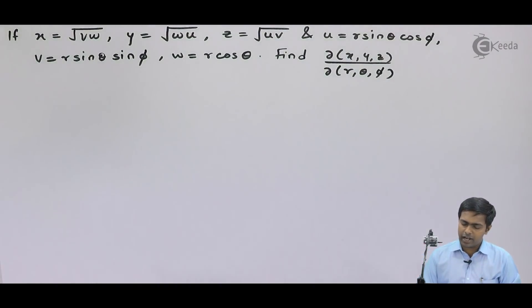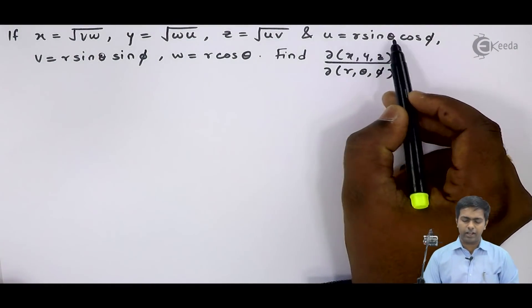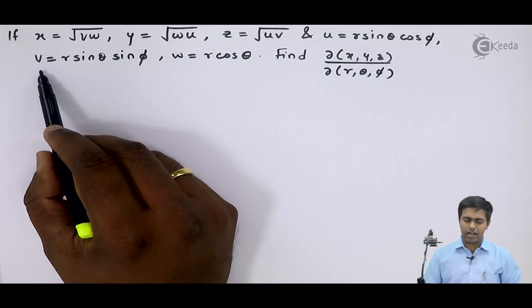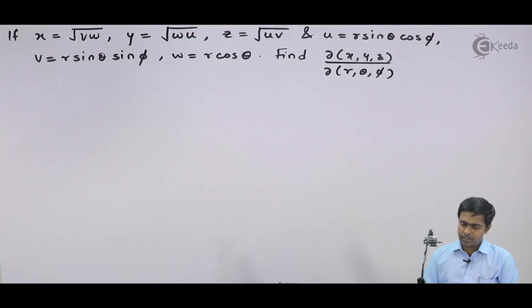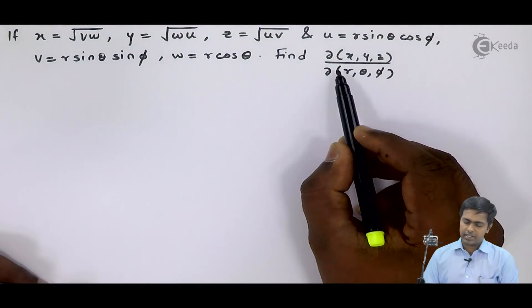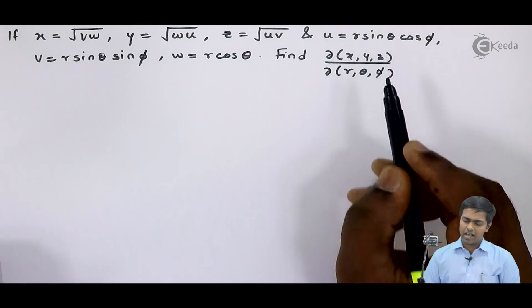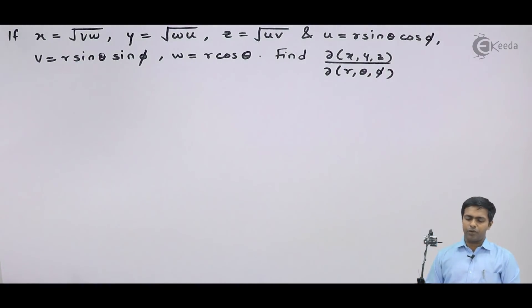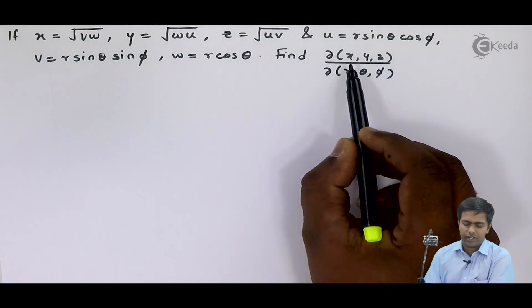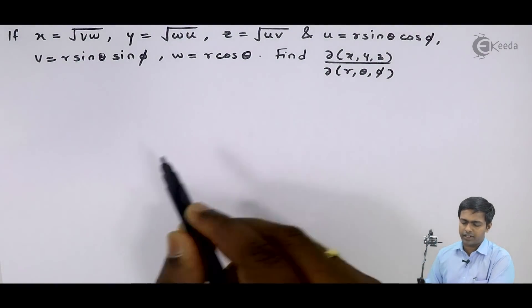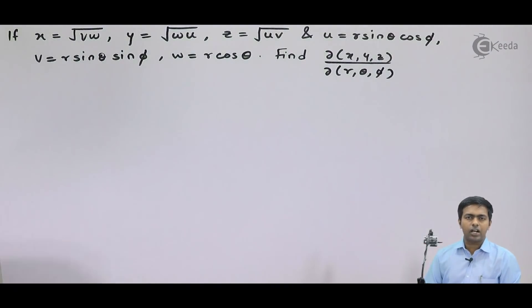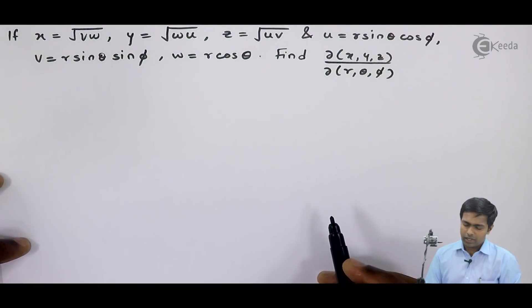Next, u is given as a function of r, theta and phi; v is given as a function of r, theta and phi; and w is also a function of r, theta and phi. The question is: what is the Jacobian of x, y, z with respect to r, theta and phi? Here x, y, z is given in terms of u, v, w and u, v, w is given in terms of r, theta and phi — so it is a composite function.